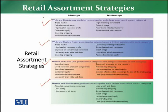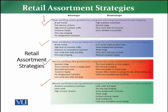When we talk about the first strategy — wide and deep assortment — retailers carry many goods and services categories and a large assortment in each category. So there will be depth in the assortment and there will be width in the assortment. Normally, a broad market is targeted because you have both depth and width in the assortment.